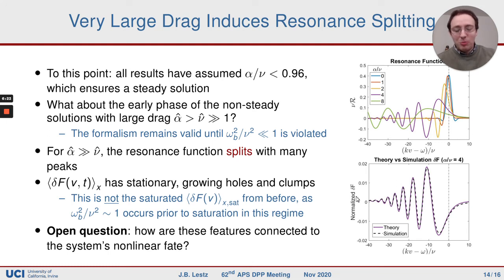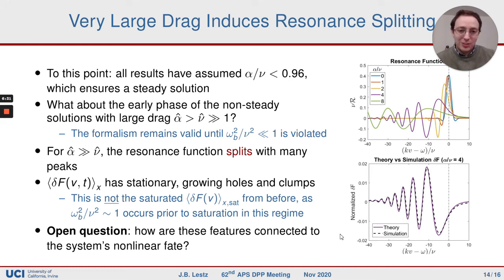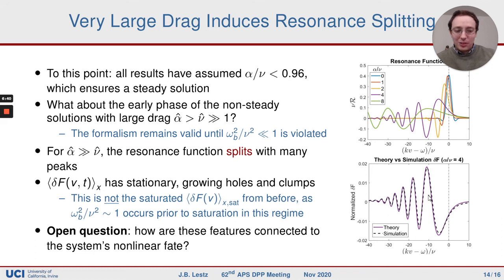The open question we find interesting is whether these features set up preferential conditions for chirping. We know that alpha much larger than nu is a situation where you don't have a steady state solution. This isn't the final saturated delta f, but it's what happens at the early phase and has some interesting qualitative features. We don't know the answer to this yet.